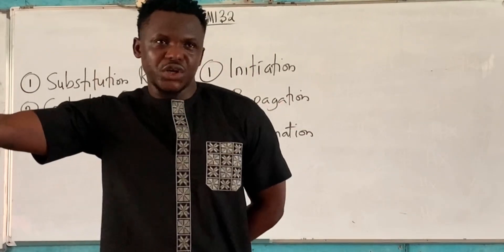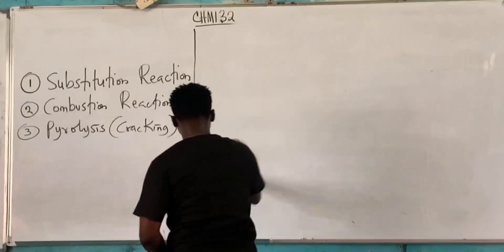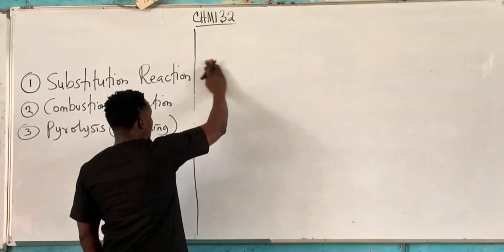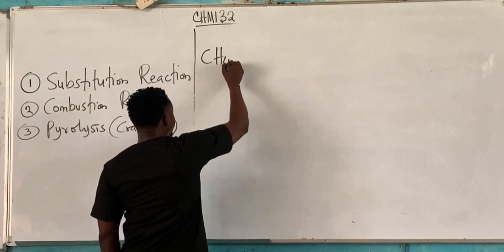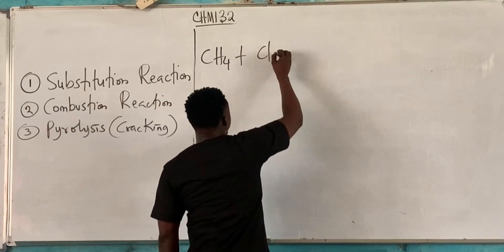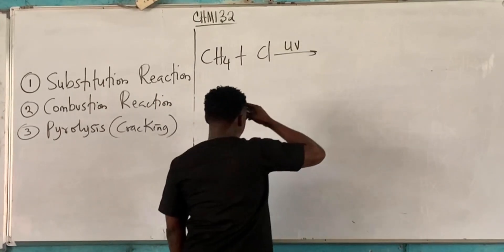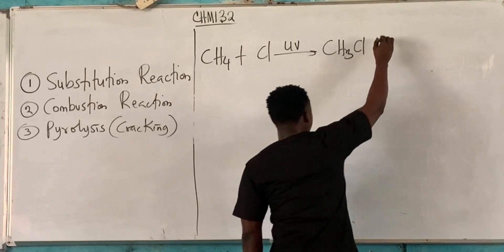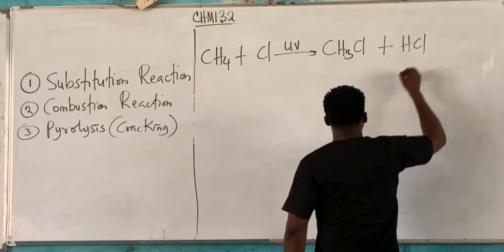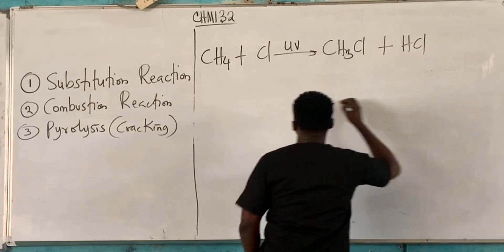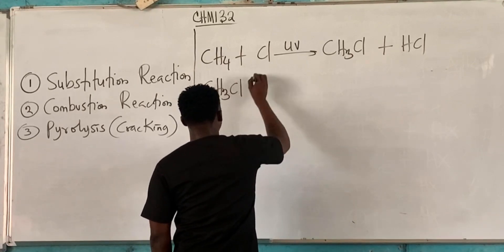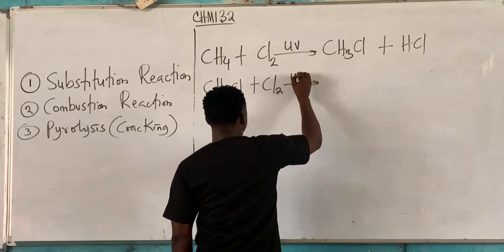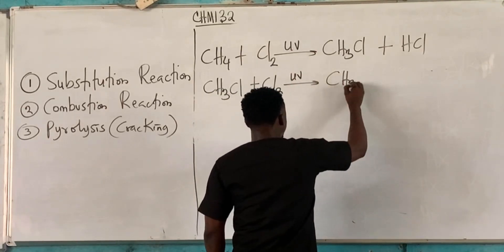Propagation is chain elongation. Let's replace X with a real reactant. We have CH4 + Cl2 under UV light. This gives CH3Cl + HCl. Now this is going to continue — we have CH3Cl + Cl2 giving CH2Cl2, and so on.